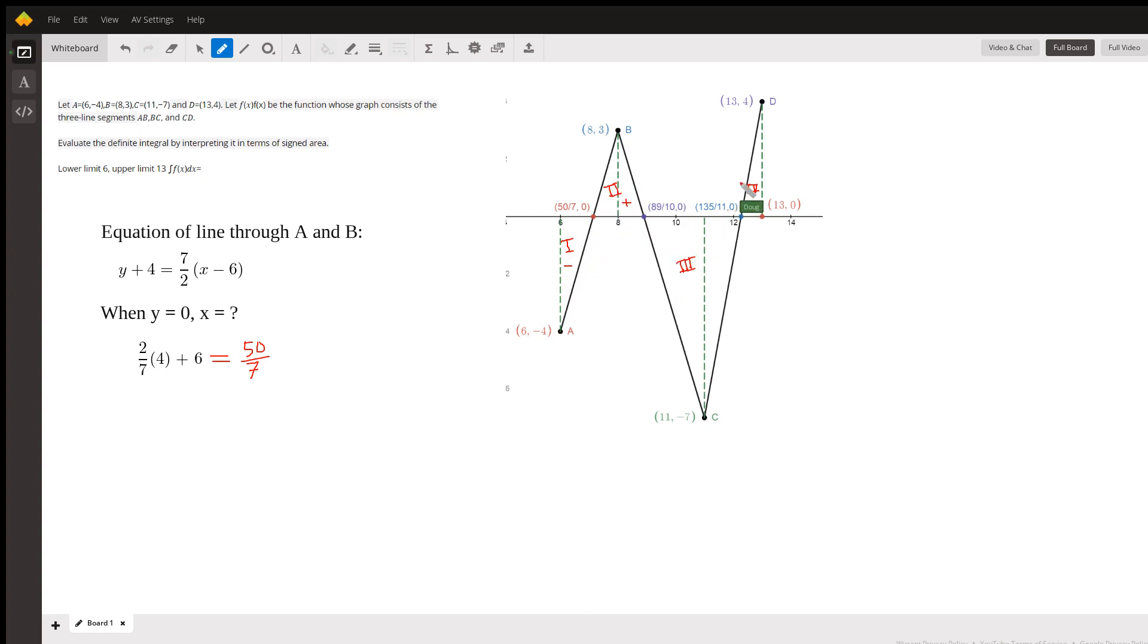So what you have to do is find the area of each of these triangles, 1, 2, 3, and 4. Add them together, but treating the areas of 1 and 3 as negative and of 2 and 4 as positive.